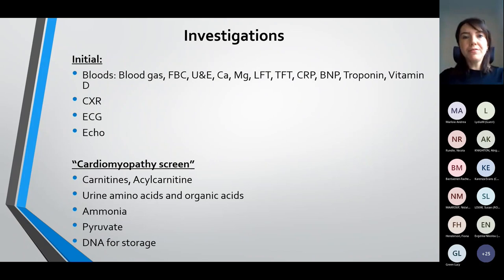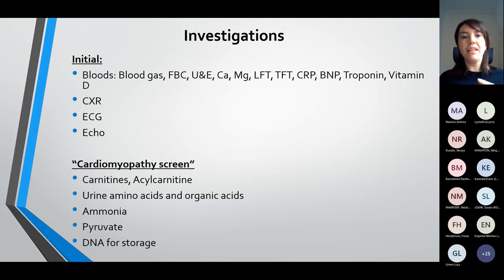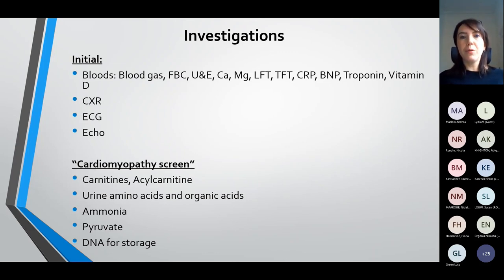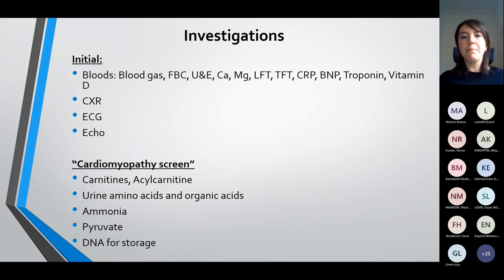In terms of investigations, I divide these into two headings. First, your initial investigations to help with diagnosis and management: blood gas, FBC, all basic investigations including BNP and troponin, a chest x-ray to look for cardiomegaly and pulmonary plethora, then your ECG and echo. But we also have to think of the underlying etiology — this is where the cardiomyopathy screen comes in. This is quite a broad net that we cast to look for other causes, incorporating metabolic conditions, neuromuscular problems, storage disorders, and we also take DNA for a genetic panel if warranted.